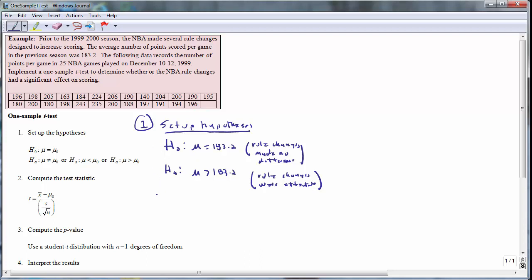Our second step is to compute the test statistic. In this case, for the one-sample t-test, the test statistic t is equal to the sample mean minus the null hypothesis mean divided by the sample standard deviation divided by the square root of sample size. The first thing we need to do is to compute the sample mean and the sample standard deviation.